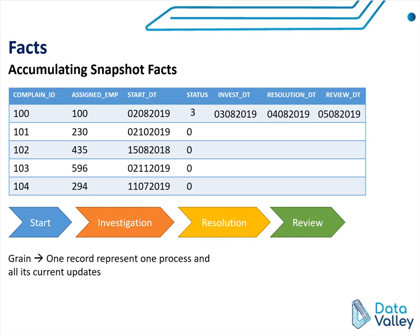There are many examples for this type of fact table. For example, you could have a fact table for employee onboarding, where you track the employee through different stages — following the same pattern as the complaints example.